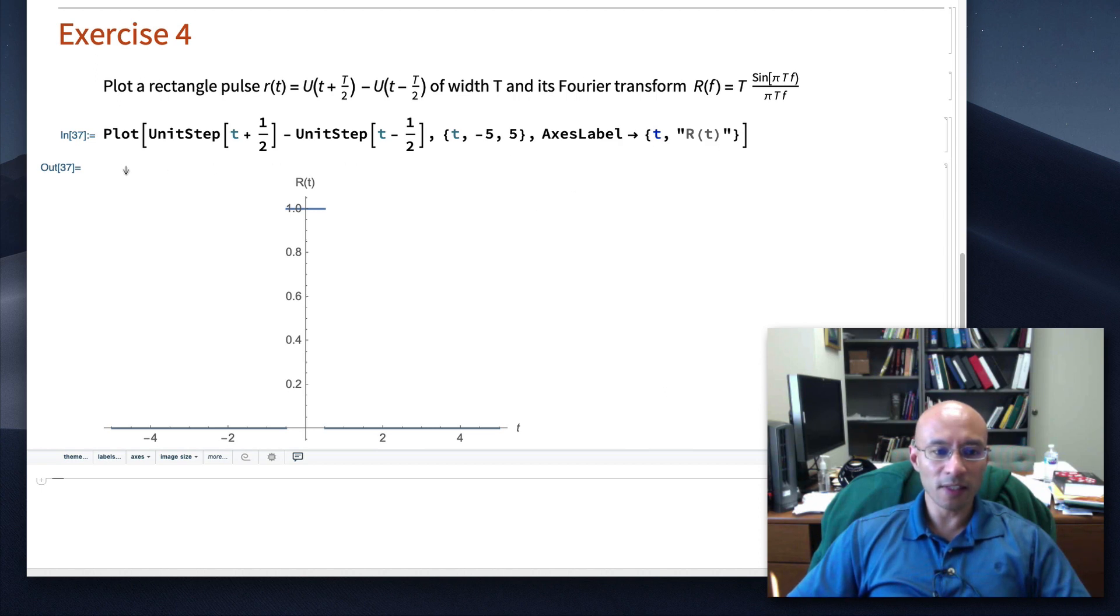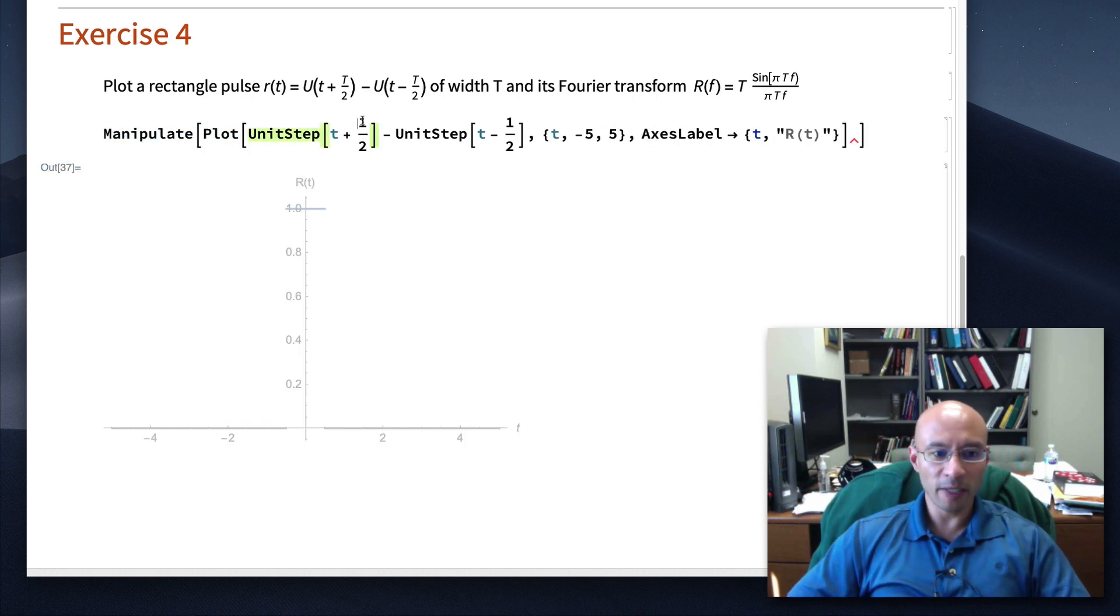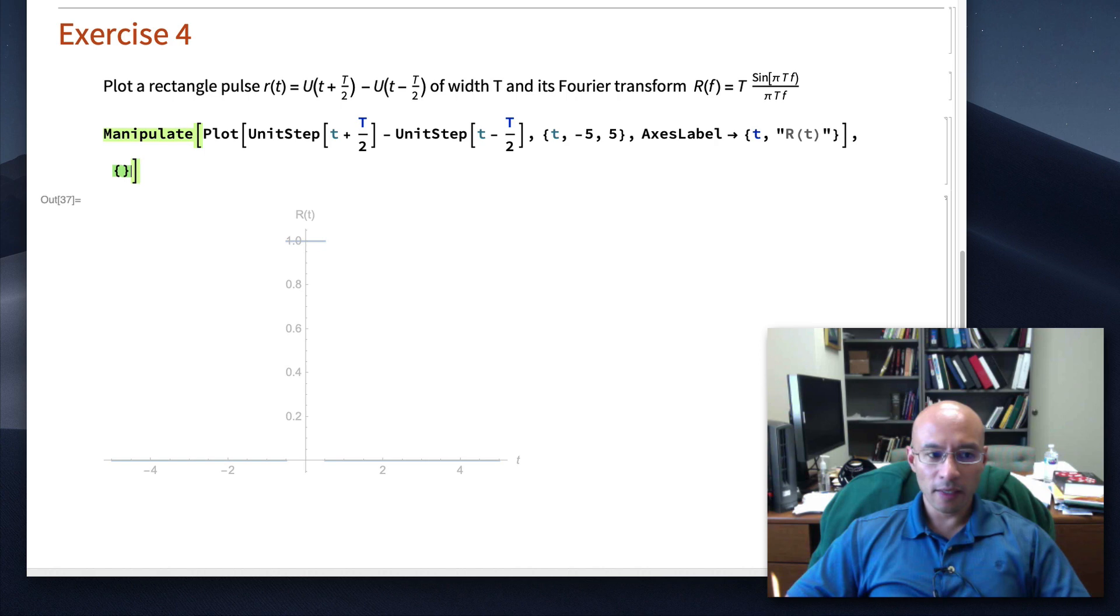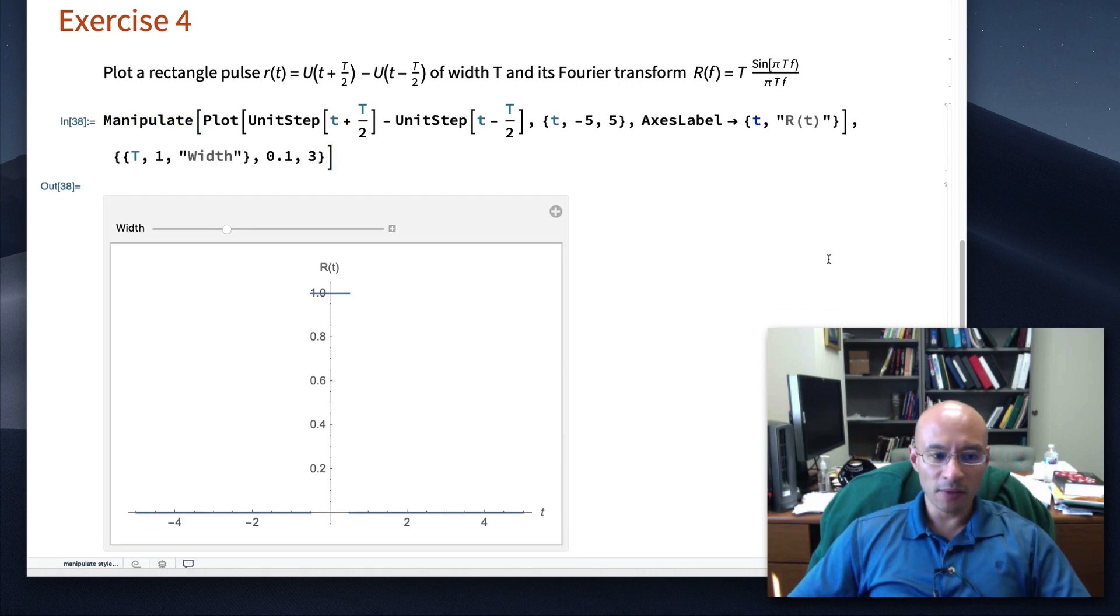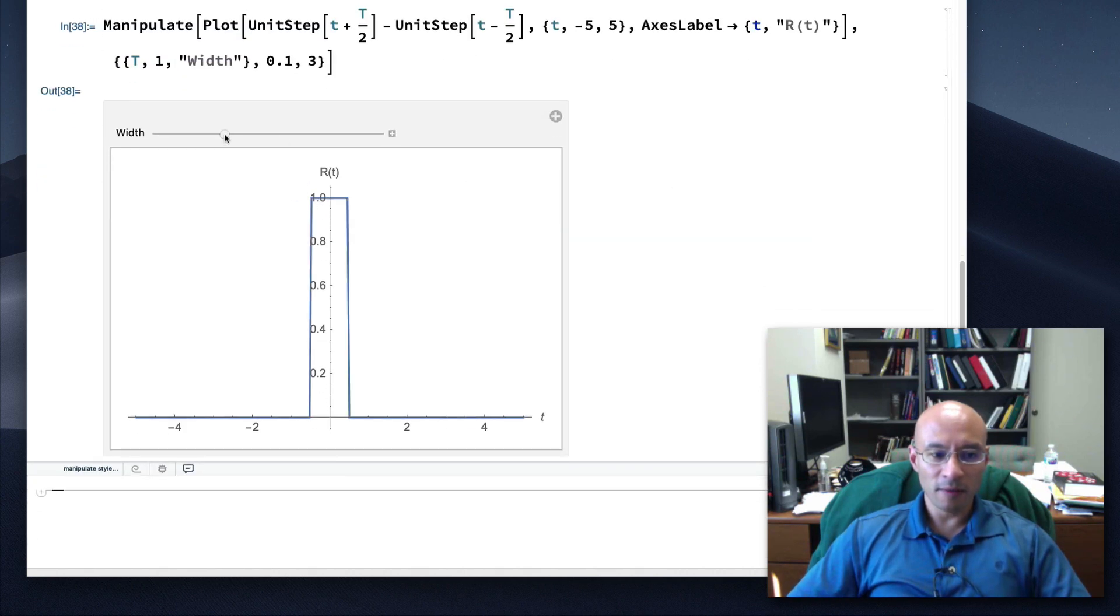Now, let's enclose this in a manipulate command so that we can put in an unknown parameter T. There's the manipulate command. We'll put in T here. And for manipulate, we're going to specify the first argument a list. T. Initial value. Let's let it be 1. And we'll call this width. And maybe it should go from 0.1 to, say, 3. Okay, so now, here it is. I can vary the width of my rectangular pulse.